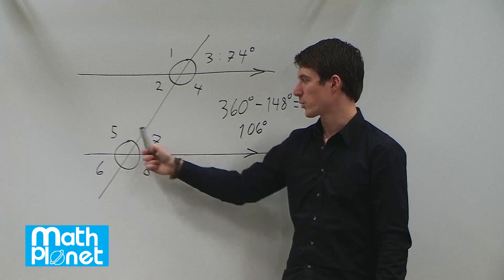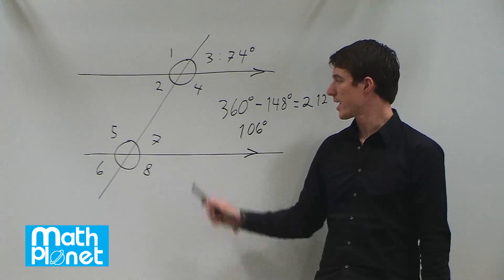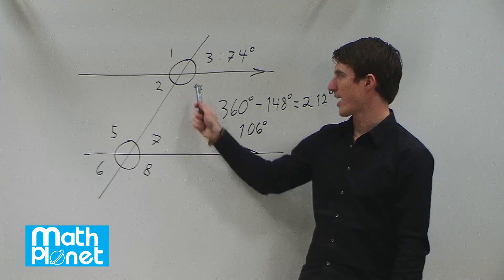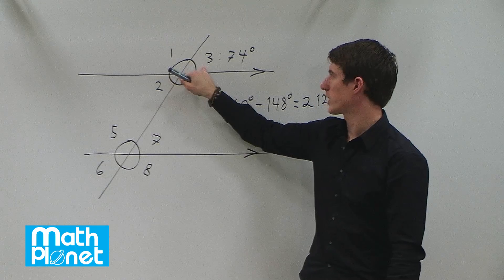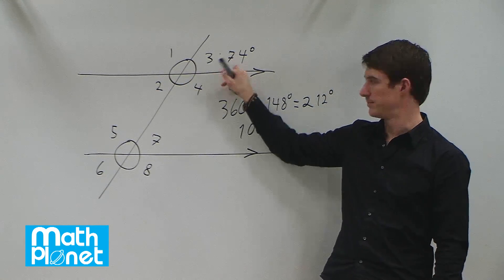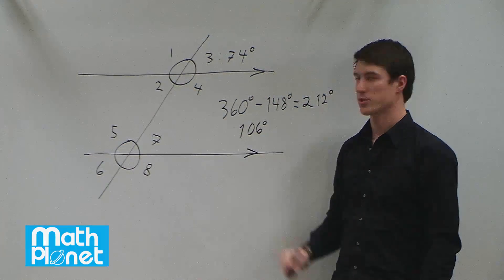Now down here, since we don't know anything about what these angles are, we have to make a comparison to here. But because these lines are parallel, it's going to be an exact one-to-one correspondence. Angles 6 and 7 are the same as 2 and 3, which is 74 degrees. Angles 5 and 8 are the same as 1 and 4, which is 106 degrees.